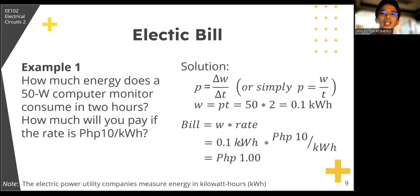Now, energy is the capacity to do work. It's measured in joules. And what we are paying for, as reflected in our electric bill, is actually energy, and it's not power. So it's worthwhile to note that electric power utilities measure energy in kilowatt hour. Here's an example. How much energy does a 50 watt computer monitor consume in two hours? How much will you pay if the rate is 10 pesos per kilowatt hour? So the solution, p is equal to, power is the rate of absorbing or expending energy, right? So p is equal to delta w over delta t, or simply p is equal to w over t. Hence, our w, that's our energy consumed, is equal to p times t.